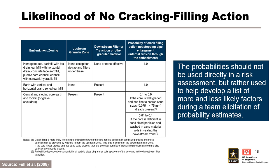If an upstream granular zone and downstream filter transition or other granular material are present, crack filling action is dependent on the compatibility of the particle sizes of the granular soils upstream of the core and in the downstream filter transition. Crack filling is more likely to stop pipe enlargement when the core zone is deficient in sand-sized particles, and these particles can be provided by washing in from the upstream zone. This aids in sealing of the downstream filter zone. If the core is well graded and has sand sizes present, then the potential benefits of crack filling are less as the sand-sized particles are already present. The probabilities should not be used directly in a risk assessment, but rather used to help develop a list of more and less likely factors during a team elicitation of probability estimates.